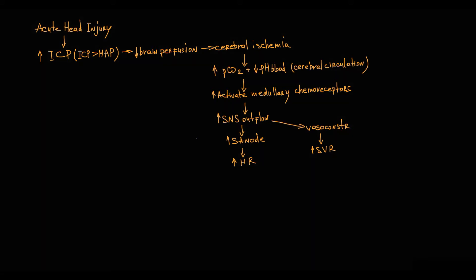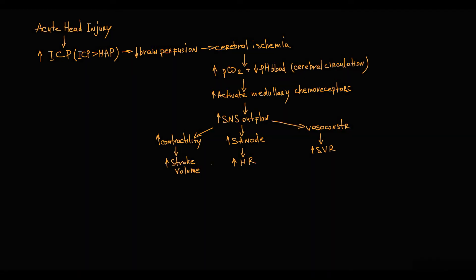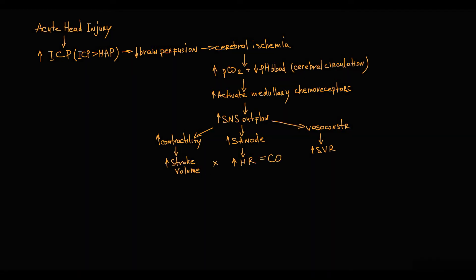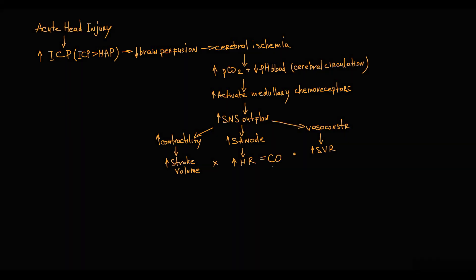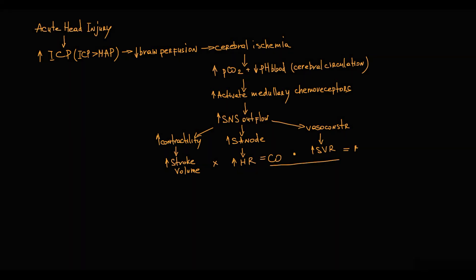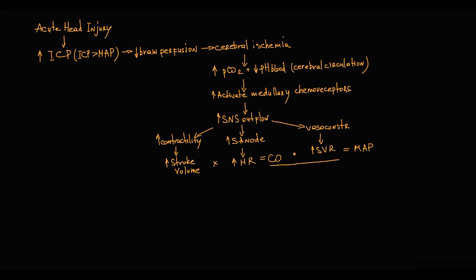Increased sympathetic outflow first causes systemic vasoconstriction, increasing systemic vascular resistance. It also stimulates the sinoatrial node, causing an increase in heart rate, and increases cardiac contractility, thereby increasing stroke volume. Since cardiac output equals stroke volume multiplied by heart rate, and mean arterial pressure equals cardiac output multiplied by systemic vascular resistance, activation of the sympathetic nervous system increases blood pressure.